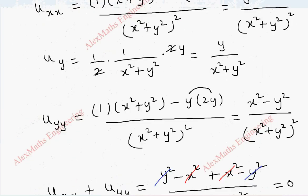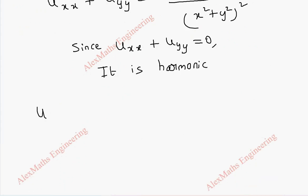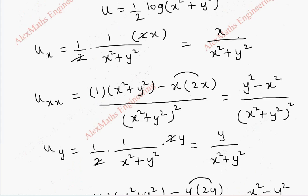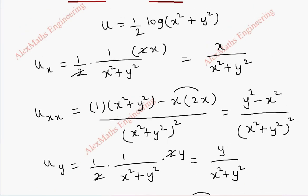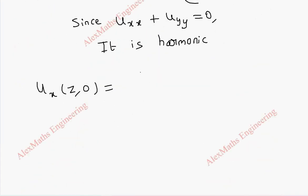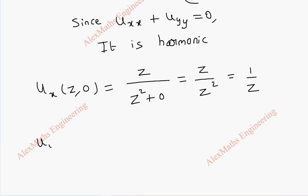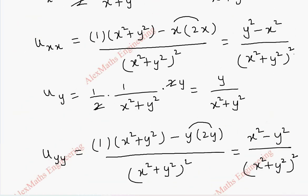Now we are going to find f of z. For that we need ux of z comma 0. We already found ux. From that we find ux of z comma 0 by replacing x with z and y with 0. That gives z by z square plus 0 square, which is z by z square, and this simplifies to 1 by z. In the same way for uy of z comma 0, wherever y appears we put 0.